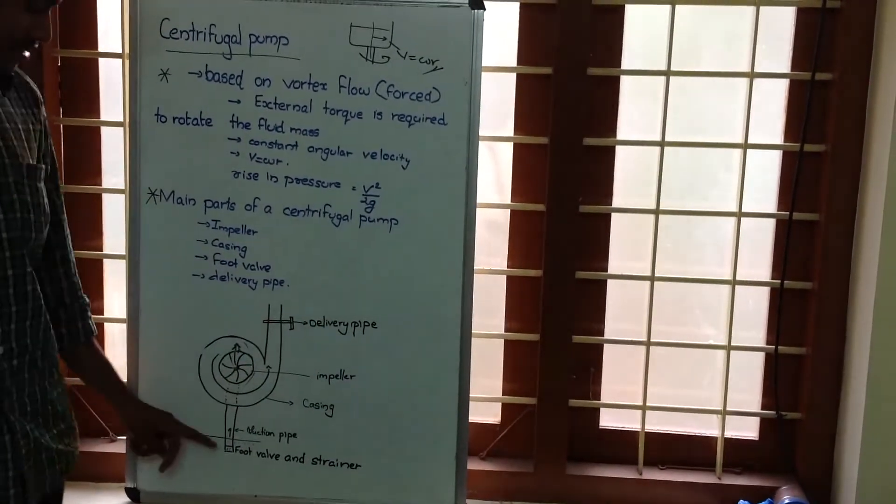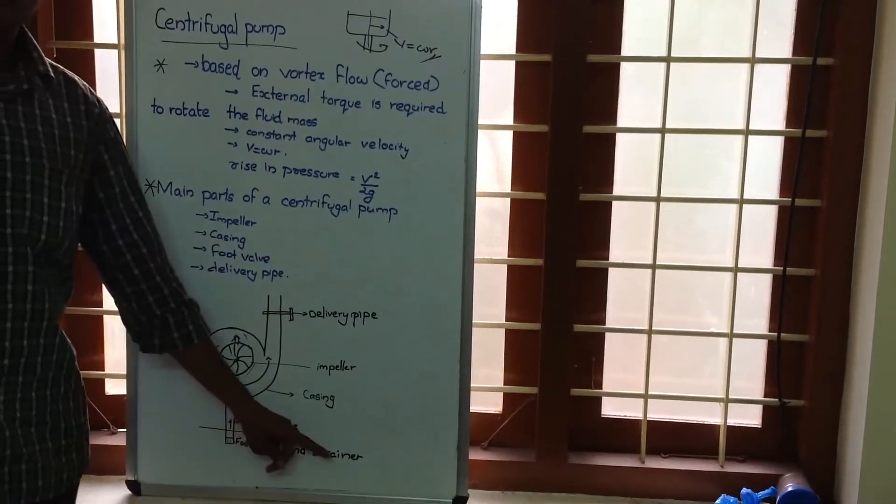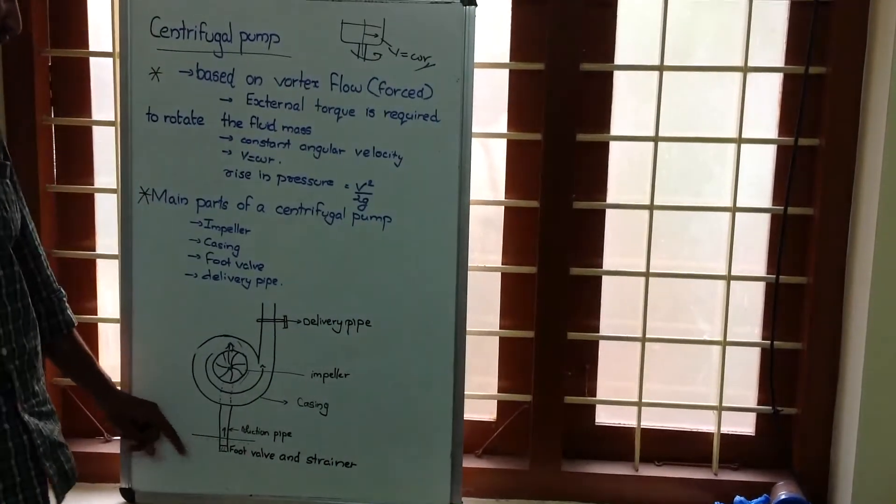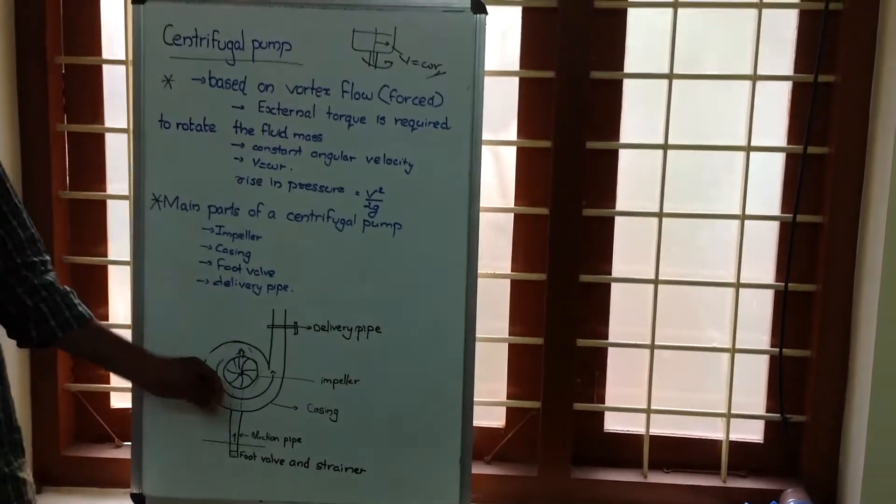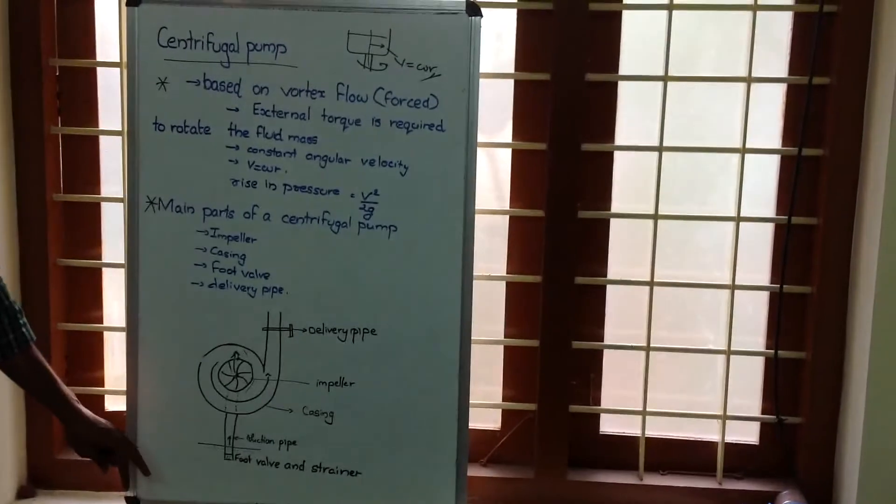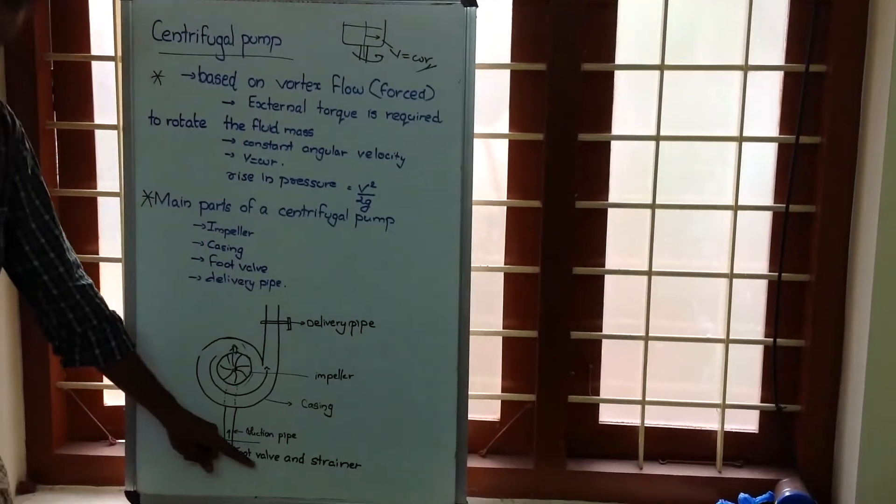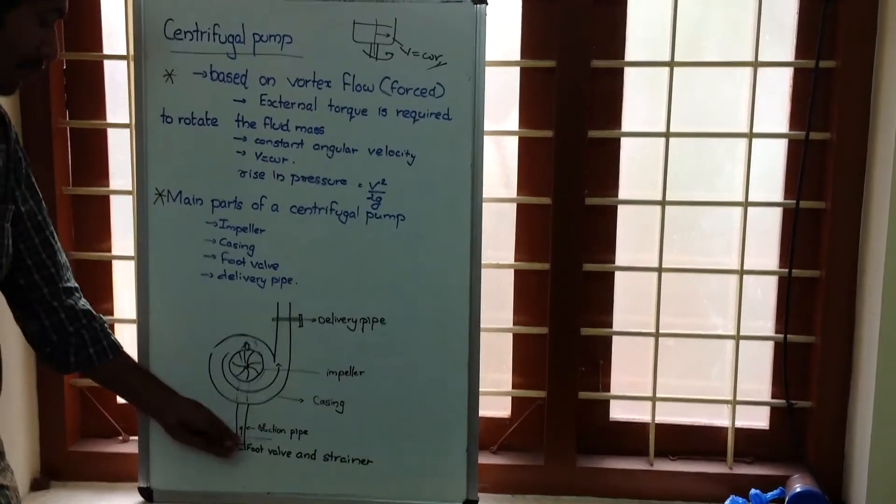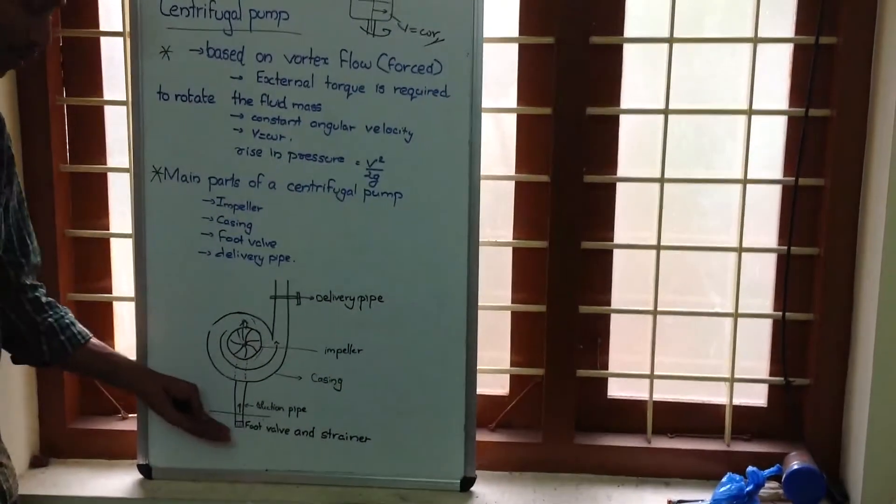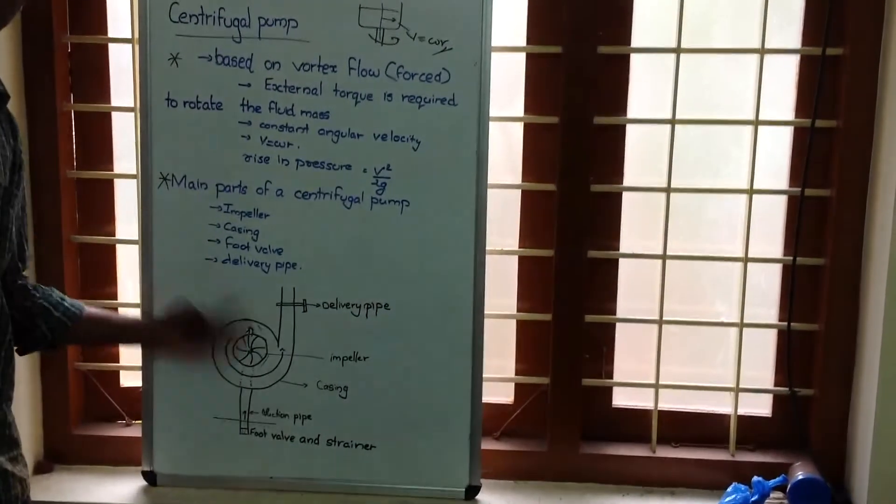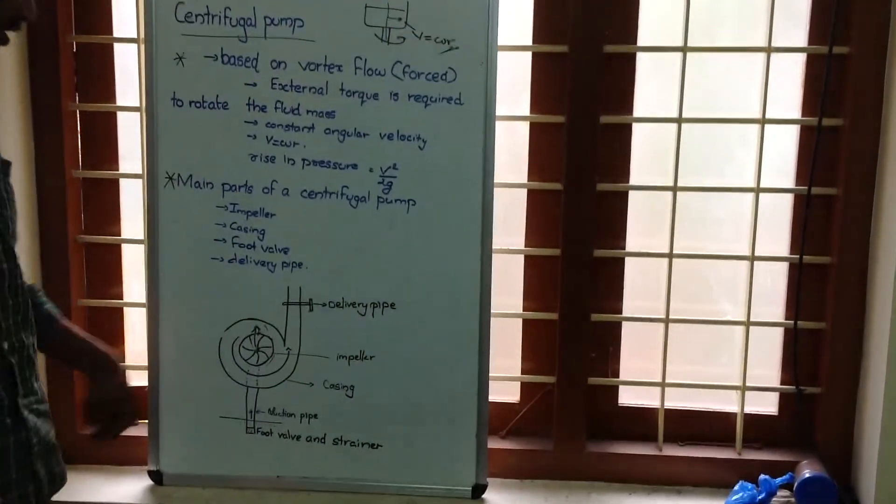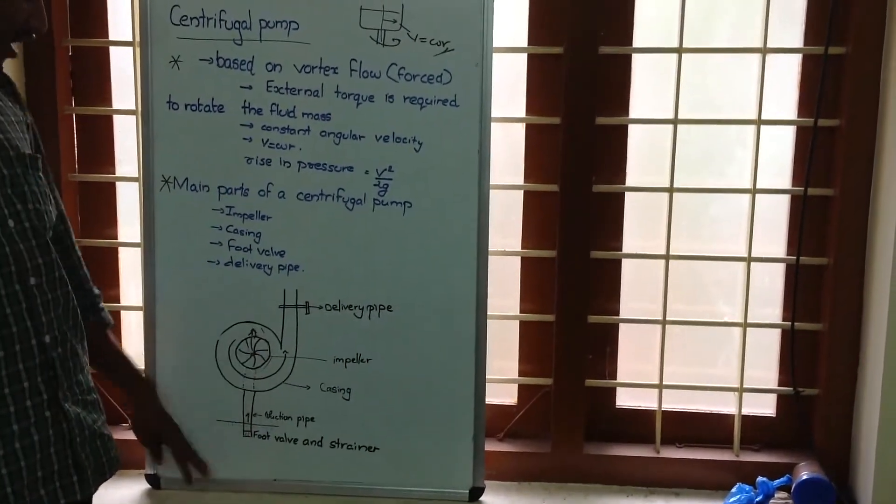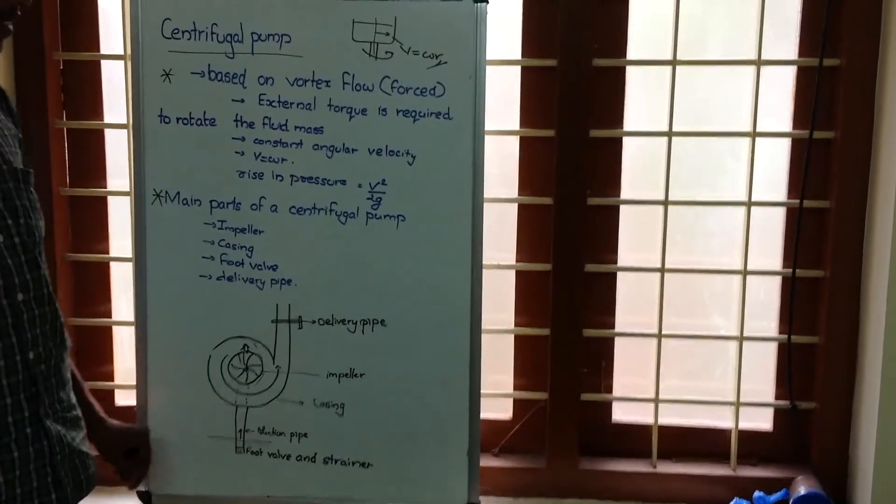Then in suction pipe, there is a foot valve and also a strainer. This strainer helps to avoid those impurities from water. This foot valve, same as that of delivery valve, helps for the upward motion and also prevents the downward motion of water through the suction pipe.